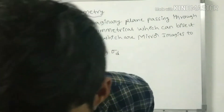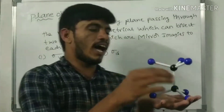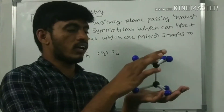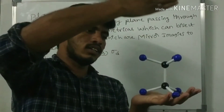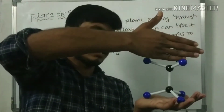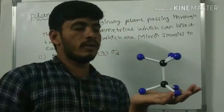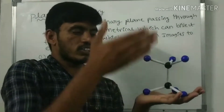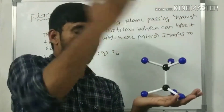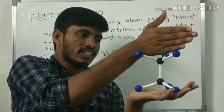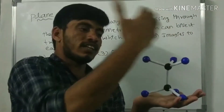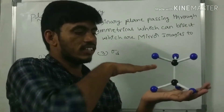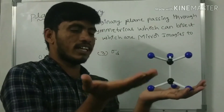Another example is eclipsed ethane conformation. The plane of symmetry passes through one hydrogen above the carbon atom and one hydrogen below the carbon atom. This is one sigma v. There are three sigma v planes for eclipsed ethane. There is also a horizontal plane perpendicular to the principal axis.